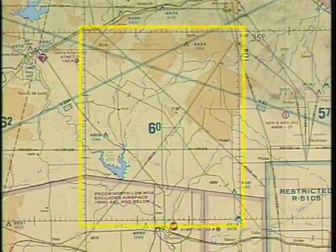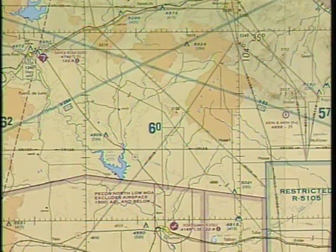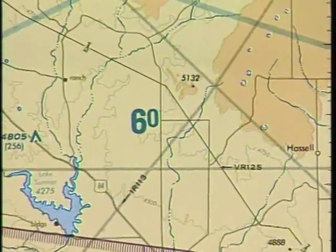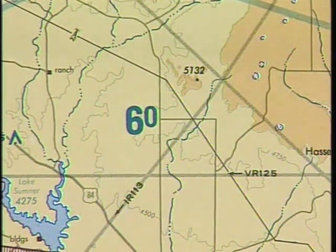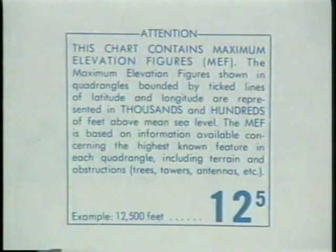Within each area enclosed by lines of latitude and longitude is a distinct number showing the maximum elevation figure, or MEF, in thousands and hundreds of feet. In this case, the 6-0 represents 6,000 feet. The MEF is the highest known feature in each quadrangle, including terrain and obstructions. An explanation of the MEF is usually found on or near the front panel.